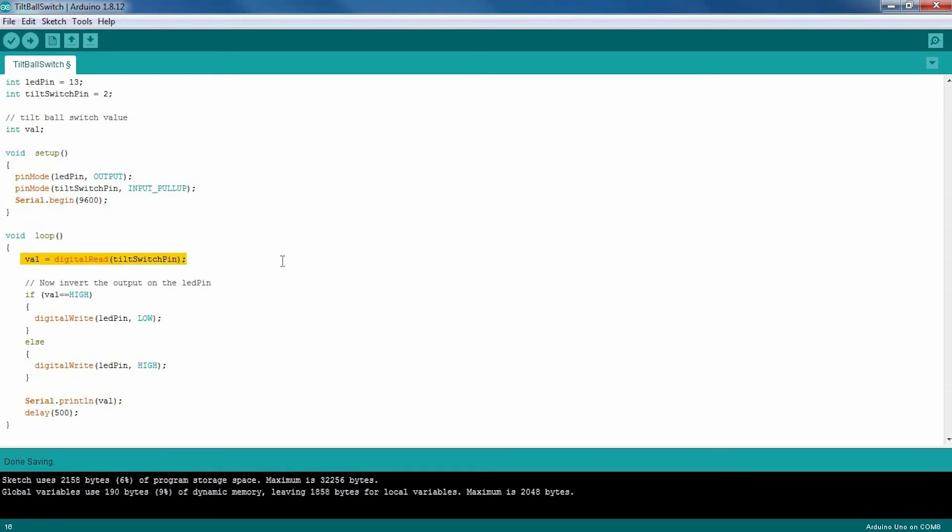In loop, let's read the tilt ball switch value. Because of the input pull up, the value will be inverted. Turn the LED on or off respectively. Print out the incoming value on the serial monitor.